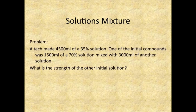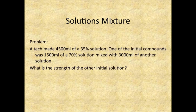The best way to understand a new concept is by working out a problem. So we are going to do one together which reads: a tech made 4,500 ml of a 35% solution. One of the initial compounds was 1,500 ml of a 70% solution mixed with 3,000 ml of another solution. What is the strength of the other initial solution?